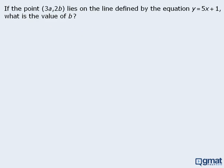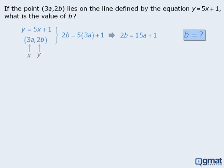Here's another example. The point lies on the line Y equals 5X plus 1, and we want to find the value of B. We have a line defined by this equation and we know that a point lies on it. Keep in mind that the point consists of an X value and a Y value. If this point lies on the line, then its coordinates must satisfy the equation. So we can replace Y with 2B and replace X with 3A to get the equation, which we can rewrite as 2B equals 15A plus 1. The target question asks us to find the value of B.